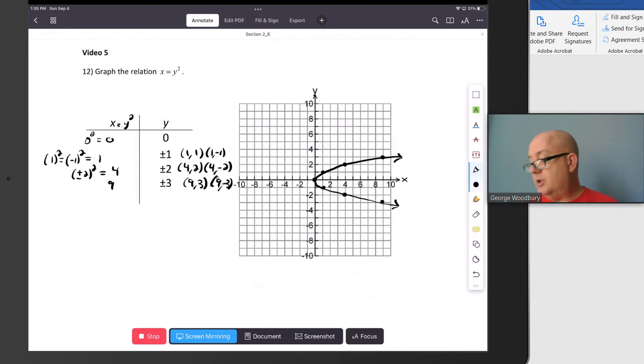Now, this is not a function because if we draw a vertical line right here, it crosses the graph at two points. And so that means that it's not a function.